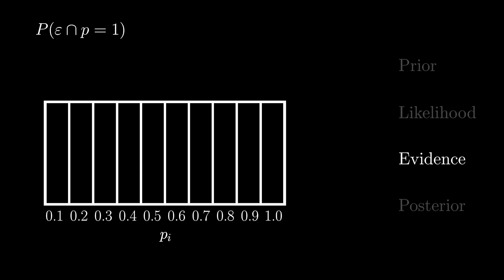What is the chance of observing our data and having p equal 1? Well, we know initially, we believe there is a 10% chance that p equals 1. And, if p equals 1, we should have seen the sun the last two days with 100% certainty.